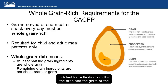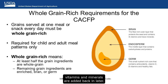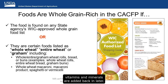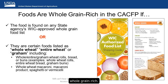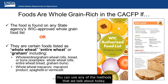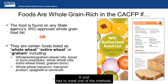Enriched ingredients mean that the bran and the germ of the kernel are removed during processing, and then some vitamins and minerals are added back in later. There are different ways to tell if a food is whole grain rich, and you can use any of the methods we talk about today. The food does not have to meet all of these methods — it just has to meet one.